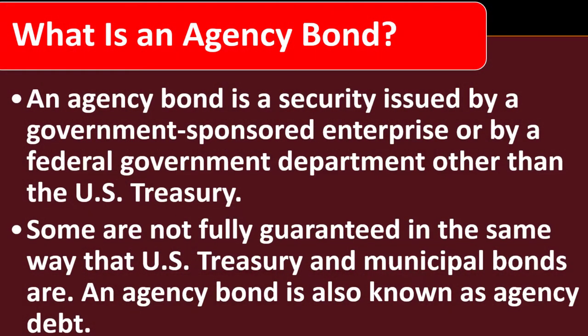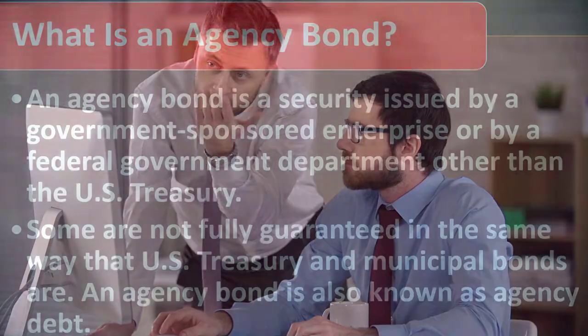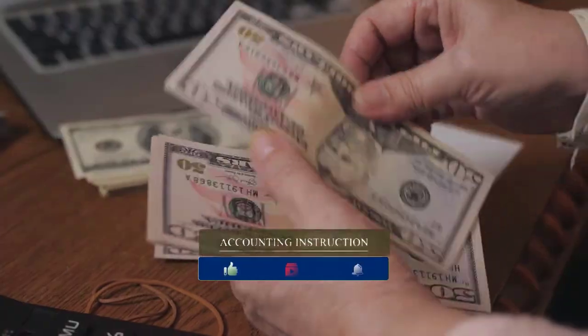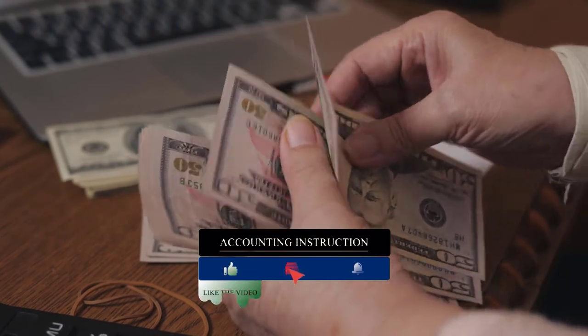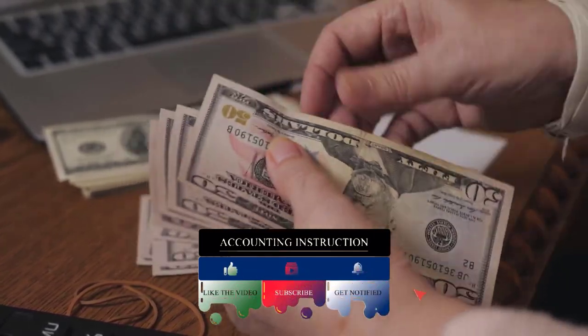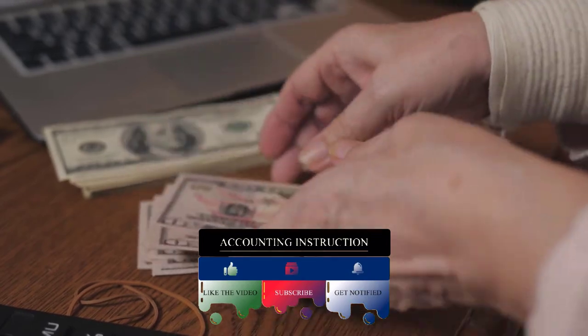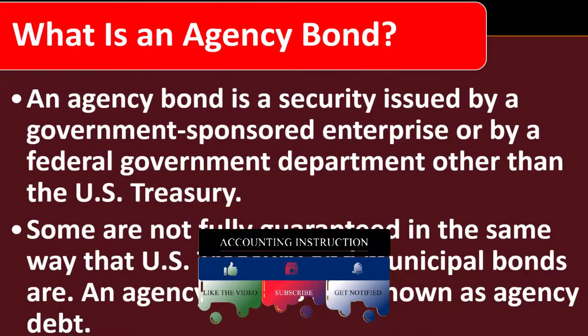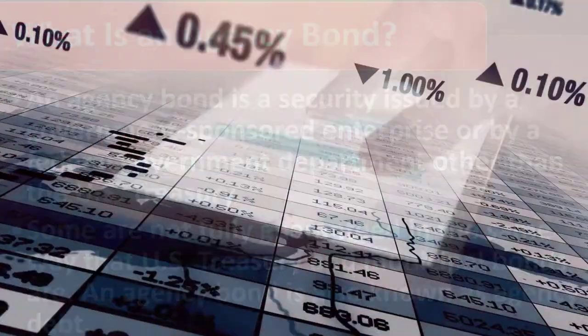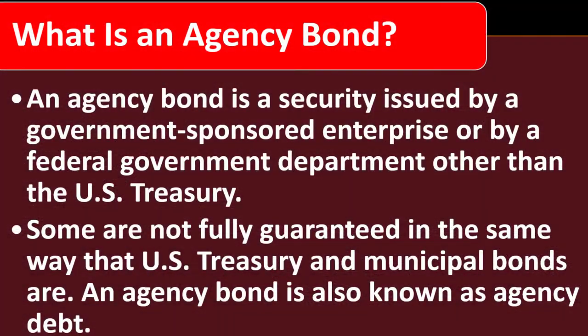Some agency bonds are not fully guaranteed in the same way that US Treasury and municipal bonds are. We want to understand the guarantees related to the bonds we're putting our money into, because that will factor into what the market determines as an appropriate interest rate. If we can put our money into secure Treasury bonds versus a less secure bond, we'd only choose the latter if we could get a greater return — that's how markets work.